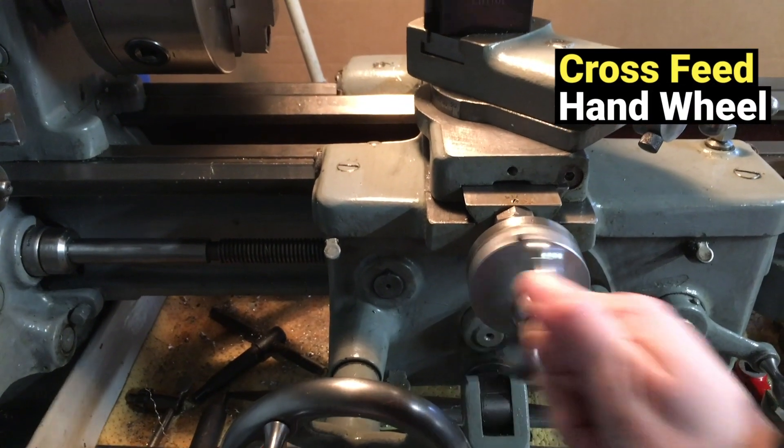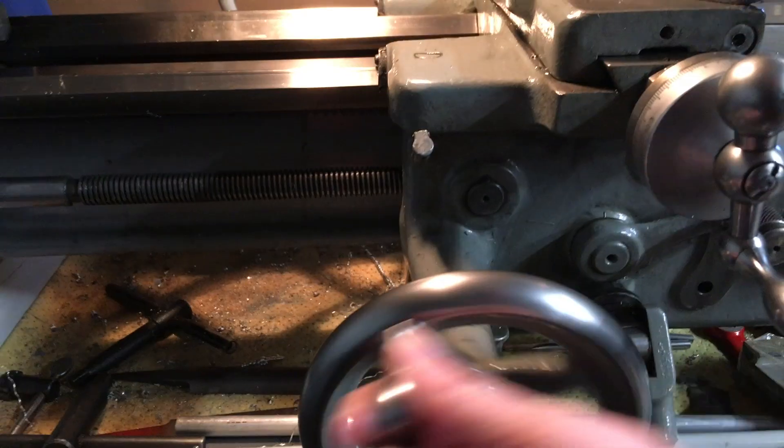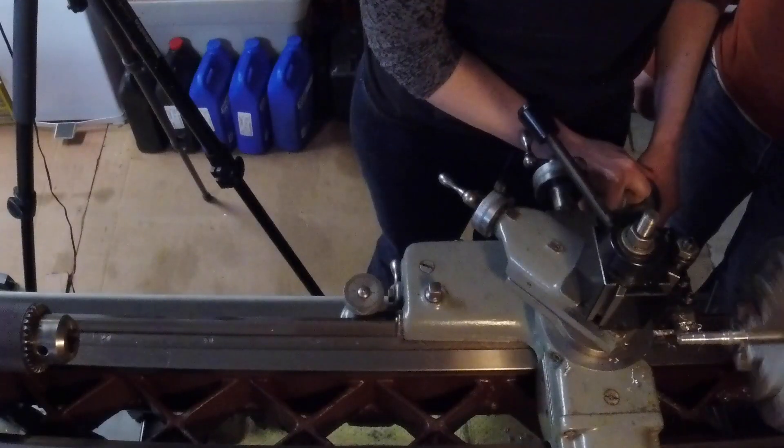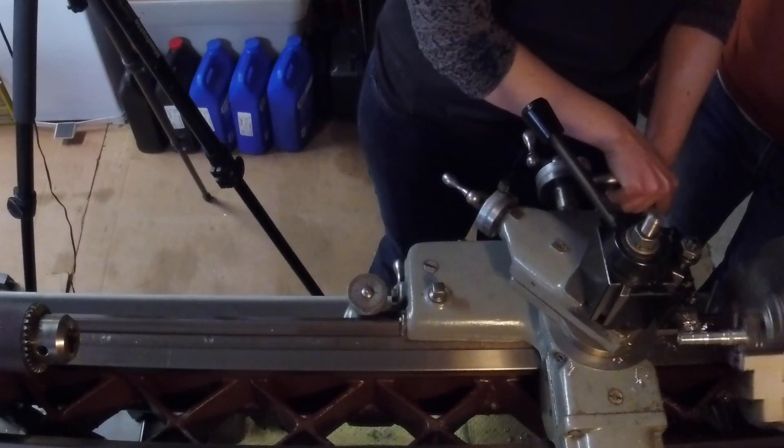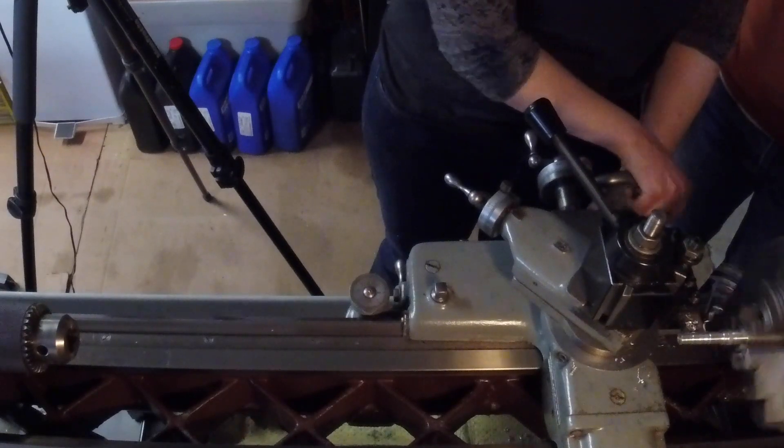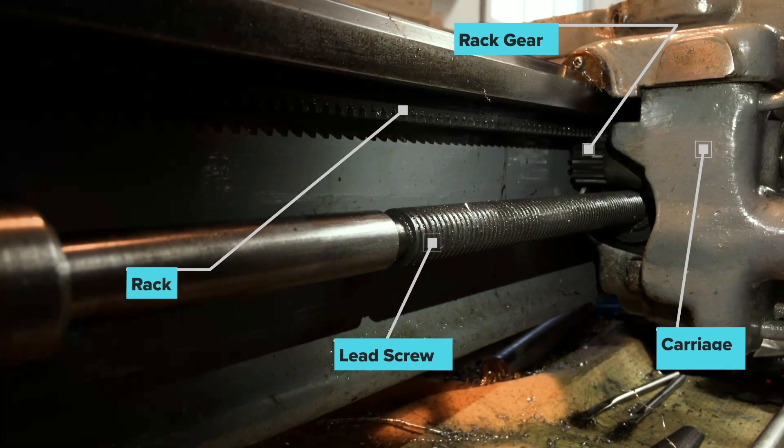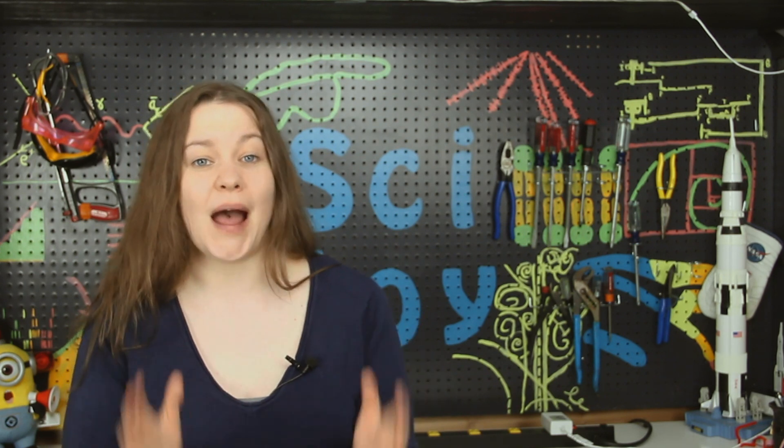Next, just to get a feel for the lathe, Tim had me surface by hand. So first, I used the cross-feed wheel to move the cutting tool just slightly into the part. And then I used the traverse wheel to move the cutting tool along the length of the part. This is why to do the actual surfacing, we want to use a power feed.